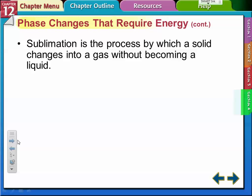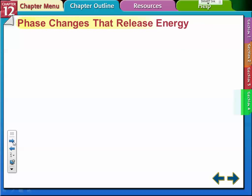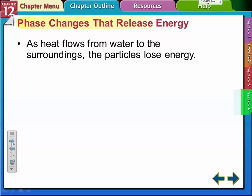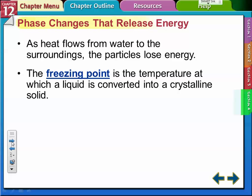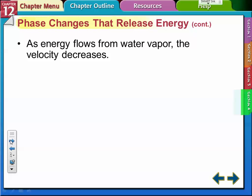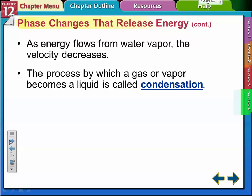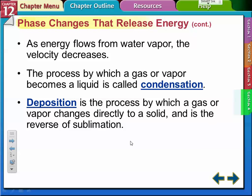Sublimation is the process in which a solid changes to a gas without becoming a liquid. Dry ice is an example of that. As heat flows from water to the surroundings, the particles lose energy. They're going backwards, going to freezing. When the temperature of a liquid is converted to a crystalline solid—as energy flows from the water vapor, the velocity decreases. The process by which a gas or vapor becomes liquid is called condensation. Deposition goes from a gas directly to a solid. It's the reverse of sublimation.